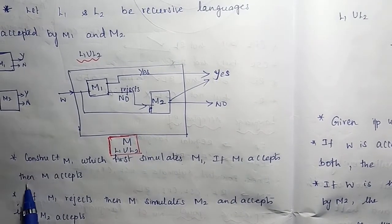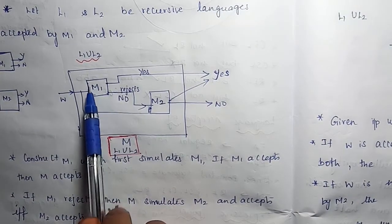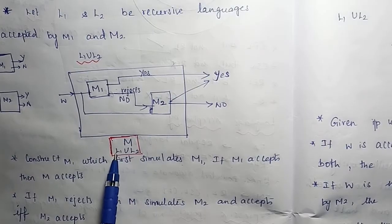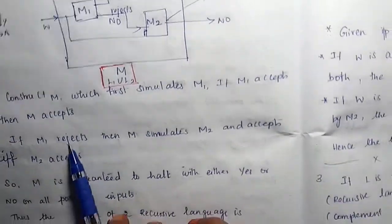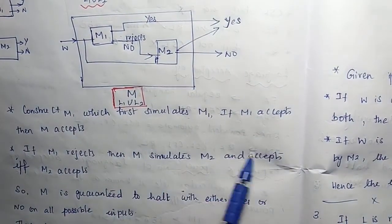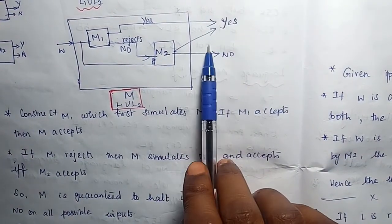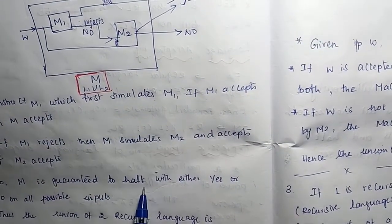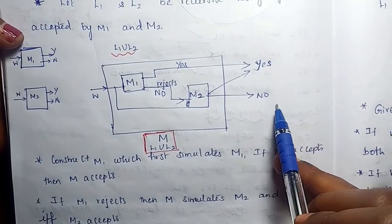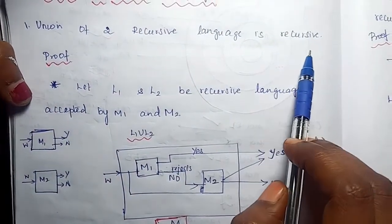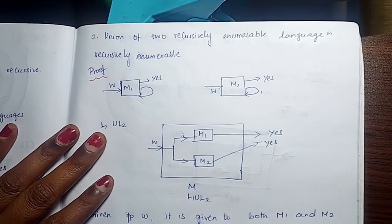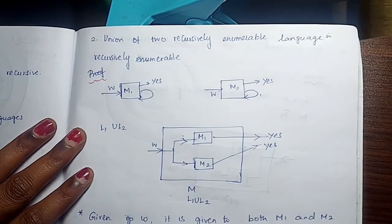The combined machine M first simulates M1. If M1 accepts, then M accepts — there is no need to check M2. If M1 rejects, then M simulates M2 and accepts if and only if M2 accepts, otherwise no. M is guaranteed to halt with either yes or no on all possible inputs. Thus the union of two recursive languages is also recursive.